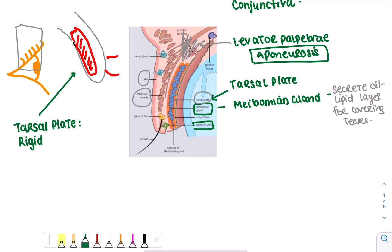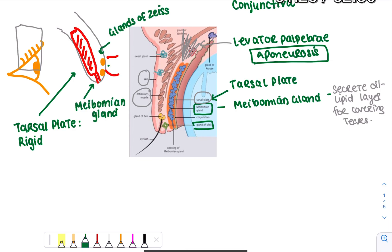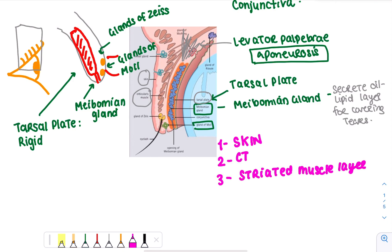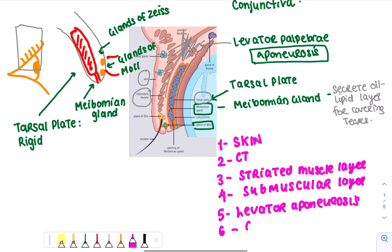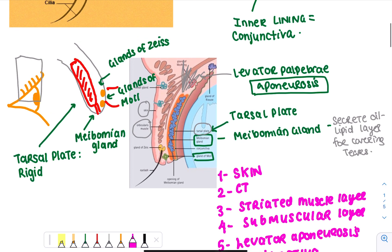The tarsal plate is this rigid part of the eyelid, and it is important for the glands as well as rigidity. From the tarsal plate you can directly see the meibomian glands demonstrated here. Within the eyelid itself you can see the glands of Zeiss and the glands of Moll, which are also important when considering different diseases of the eyelid. There are only three glands to remember: the meibomian glands from the tarsal plate, the glands of Zeiss, and the glands of Moll. The layers in order are: skin, connective tissue, striated muscle, sub-muscular layer, tarsal plate, levator palpebra aponeurosis, and then the conjunctiva as the most inner lining. Thank you for watching — please give this video a like if you enjoyed, and I'll see you for the next video.